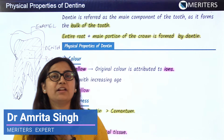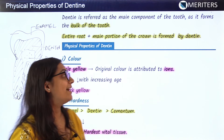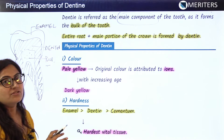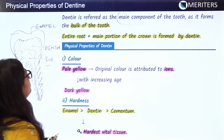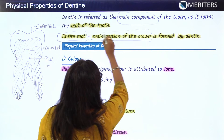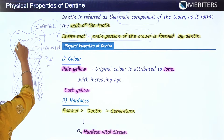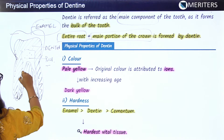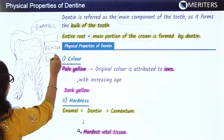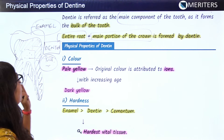Today we will be covering a very important topic: physical properties of dentine. Dentine is referred to as the main component of the tooth structure. It forms the structure and bulk of the tooth because it covers the entire root and the main portion of the crown. As seen in the diagram, the outermost hardest tissue is enamel, the inside part covering the root and crown is dentine, and the inner soft tissue is the pulp.